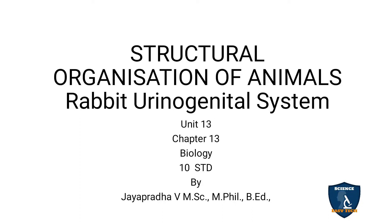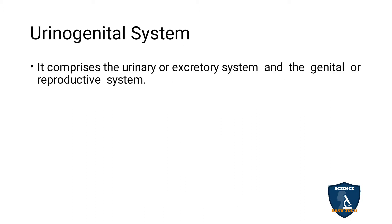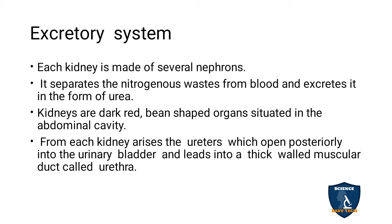Today our topic is the rabbit urinogenital system in structural organization of animals. The urinogenital system comprises the urinary or excretory system and the genital or reproductive system.